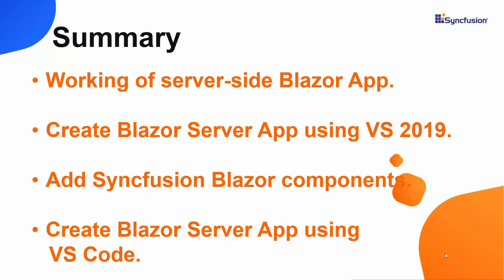Let me summarize what we have seen so far. First we saw how the Blazor server app works and how to create a simple Blazor server app using Visual Studio 2019. Then we saw how to configure and add Syncfusion Blazor components like Calendar and Grid to the Index component. And at last we also saw how to create the same Blazor server app using Visual Studio Code. To see the working example you can download it from the GitHub links shared in the description. If you find this video useful, give a like and subscribe to our channel. Thank you for watching, and stay tuned for my next video on how to add Syncfusion Blazor components to the Blazor WebAssembly application.